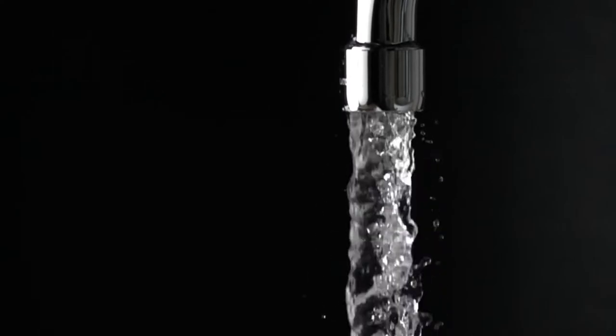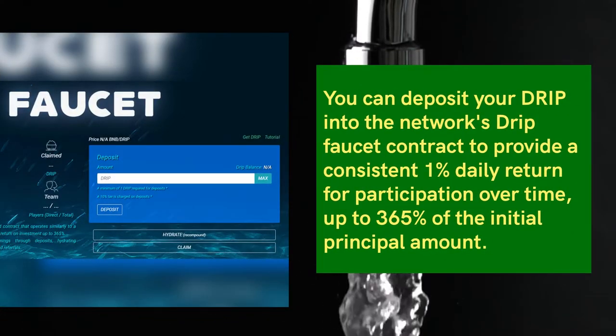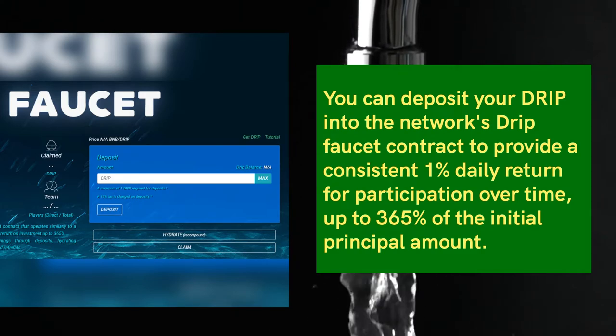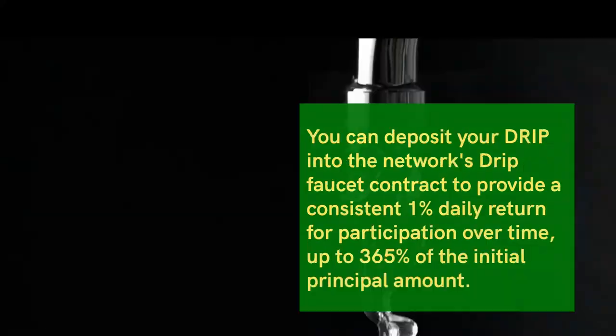You can deposit your DRIP into the network's DRIP faucet contract to provide a consistent 1% daily return for participation over time, up to 365% of the initial principal amount.